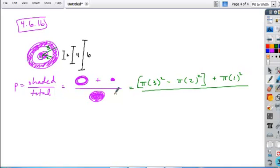That's all divided by the whole circle, which is pi times 3 squared. Calculating what we have here: 9 pi minus 4 pi plus 1 pi, all over 9 pi, which gives us 6 pi over 9 pi.